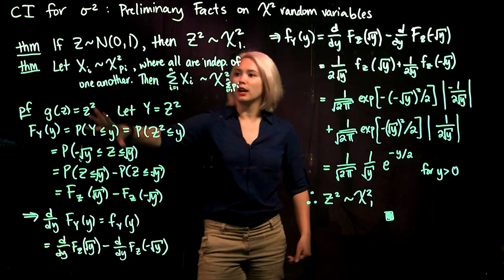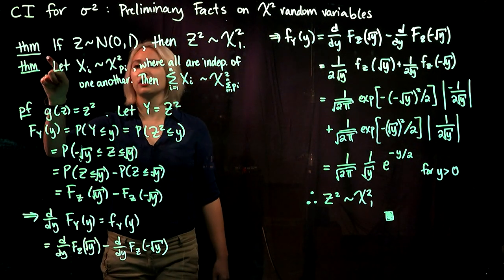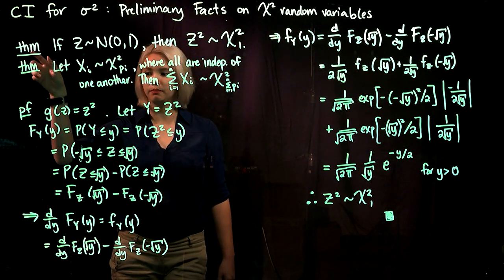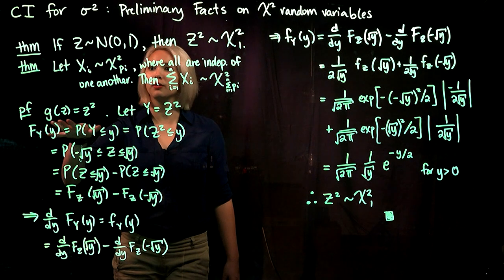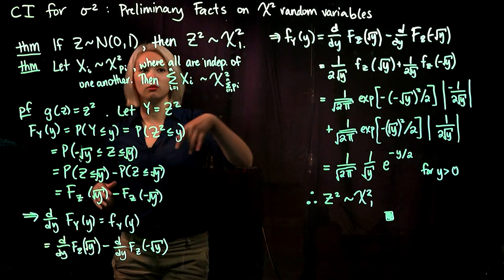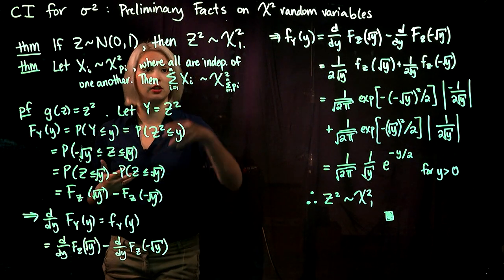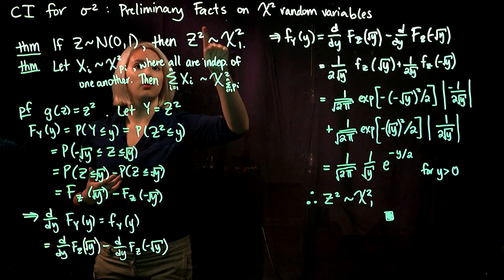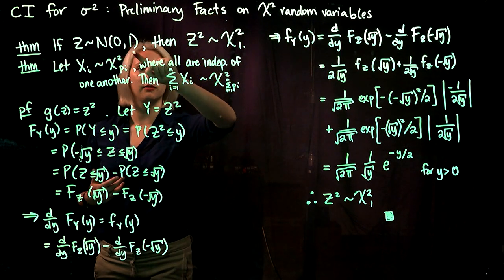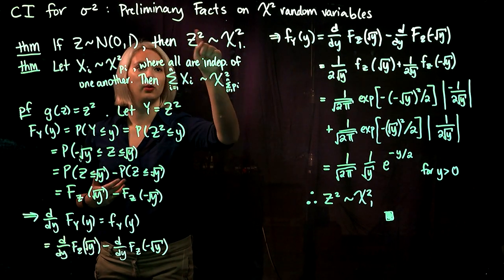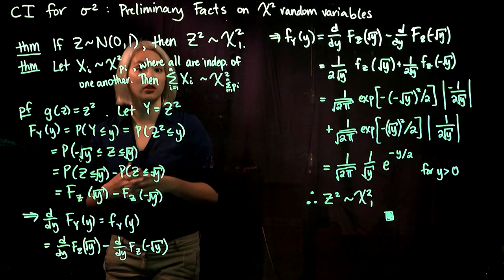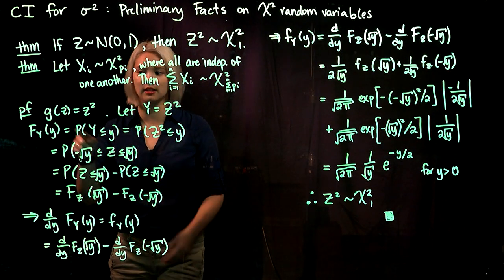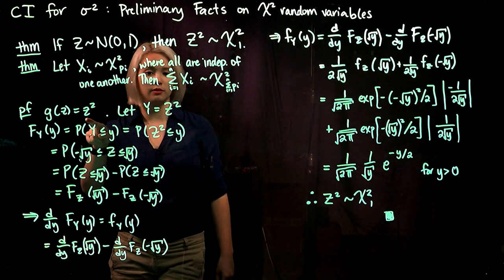In this video, we're going to concentrate on proving this first theorem. To prove it, it's pretty much just a transformation. We know that we have a standard normal random variable Z and we are squaring it, so the transformation we're going to use is Z squared.